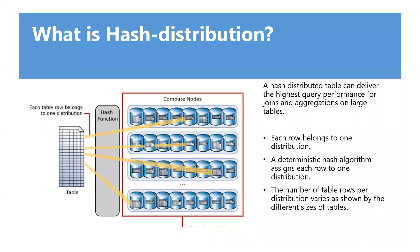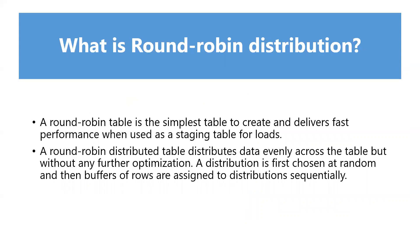Each row belongs to one distribution, and a deterministic hash algorithm assigns each row to one distribution. The number of table rows per distribution varies, as shown by the different sizes of tables in the diagram. For all large tables or production fact tables, hash distribution is the best option — it improves query performance. Azure recommends hash distribution for large tables with a lot of joining.